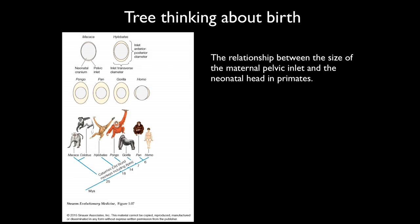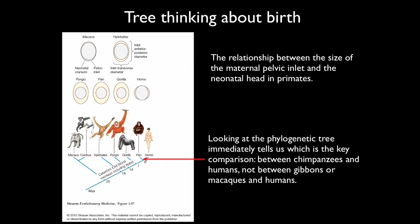What is the primitive and what is the derived state here? Is the human birth canal filled by the infant's head because humans are similar to macaques, or is another comparison more appropriate? Looking at the phylogenetic tree, the key comparison is not between macaques and humans, but between chimpanzees and humans. That tells us that the difficulties of human childbirth are a fairly recent derived condition that must be associated with something that changed between chimpanzees and humans.